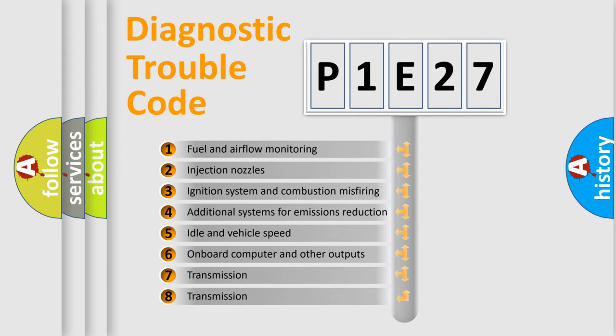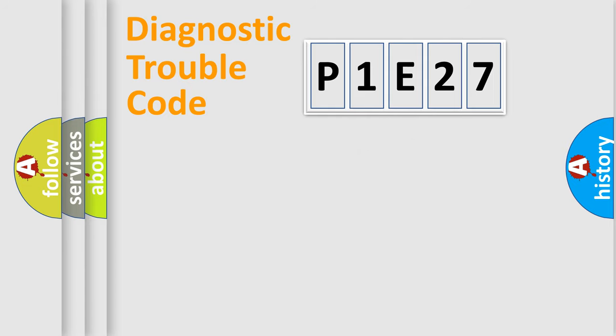The third character specifies a subset of errors. The distribution shown is valid only for the standardized DTC code. Only the last two characters define the specific fault of the group.